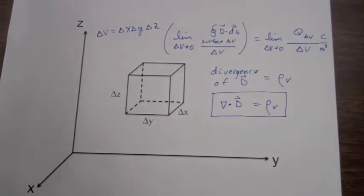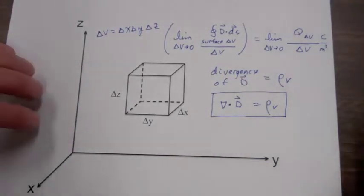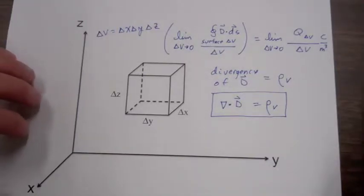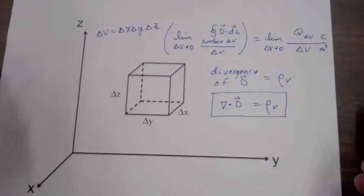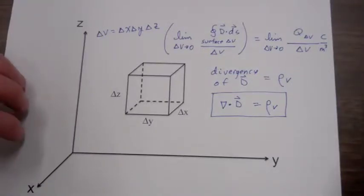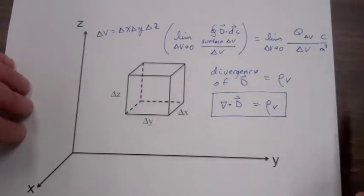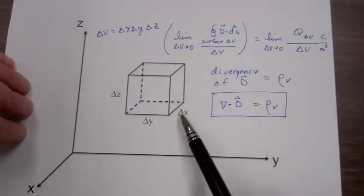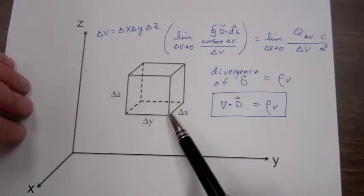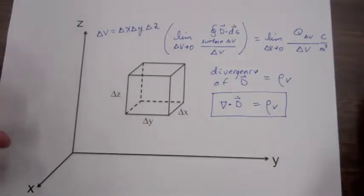In part one we introduced the concept of taking the divergence of a vector field. What we're going to do now is look at the mechanics of how you would actually do this in Cartesian coordinates. We're going to look at a differential volume in Cartesian coordinates, which will be a cube with sides delta x, delta y, and delta z.